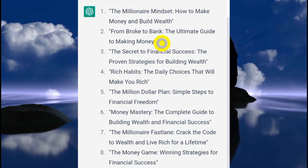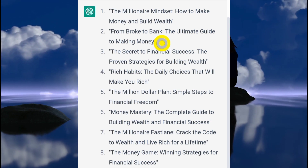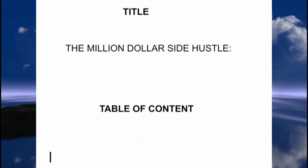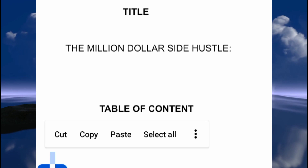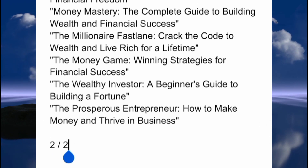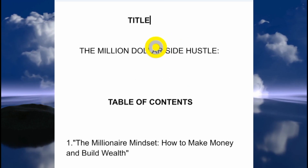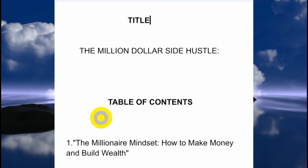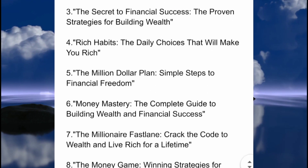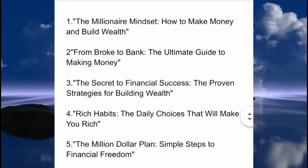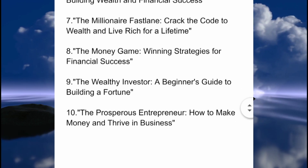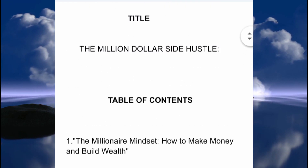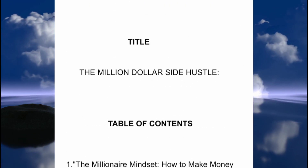What you can do now is copy these chapters and come to Google Docs and paste them there. On my Google Docs you can see I've got the title of the book — 'The Million Dollar Side Hustle' — and my table of contents with the 10 chapters ChatGPT generated for me. I quickly deleted what wasn't supposed to be there, so now I've got everything organized.